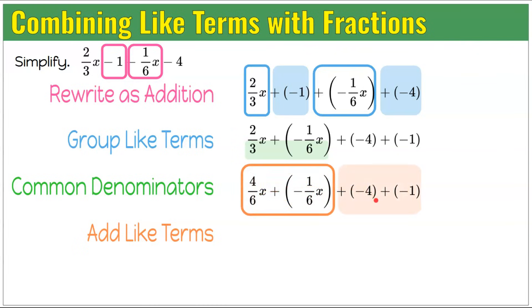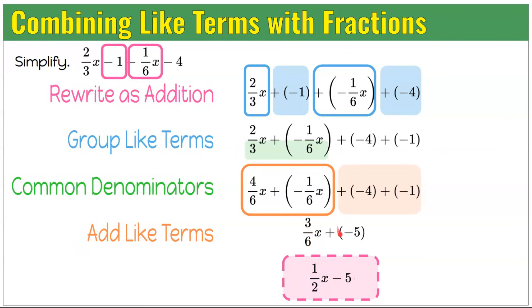Now add like terms. 4 sixths x add negative 1 sixth x gives 3 sixths x. Negative 4 and negative 1 give negative 5. Rewriting more neatly: 3 sixths simplifies to 1 half, and add negative 5 is written as subtract 5. So this expression in simplest form is 1 half x subtract 5.